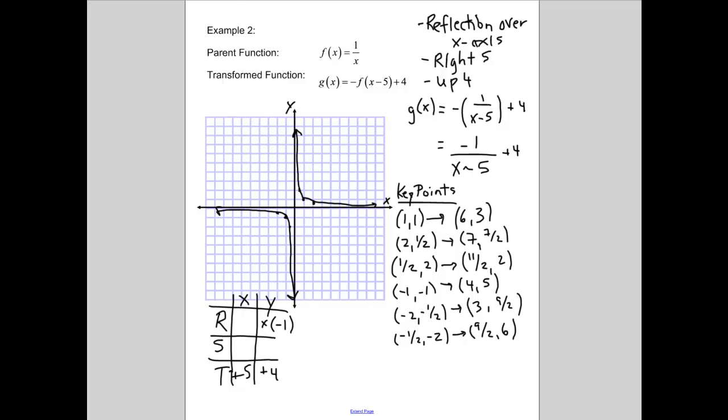So, let's plot these on our graph now. I'll use red. So, (6,3). So, 1, 2, 3, 4, 5, 6, and then 1, 2, 3, up 3. (7, 7/2), which is 3.5. So, 7 and 3.5, which would be right there. And then 11 over 2, remember that's 5.5. And then 2. So, 1, 2, 3, 4, 5 and a half, and then up 2. So, we get our graph right there.